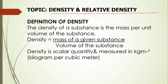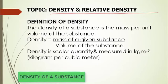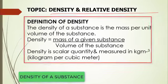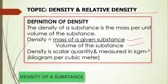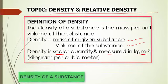When we talk about density, we are simply referring to the compactness of a substance. Density is defined as the mass per unit volume of a substance. It is given by the ratio of the mass of the given substance to the volume of that substance. Density is a scalar quantity, and it is measured in kilograms per meter cube.